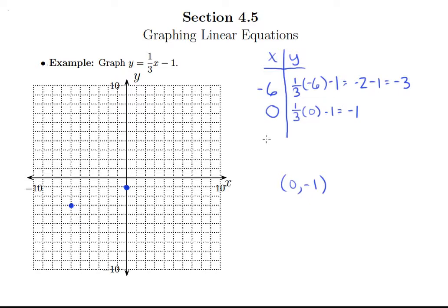So we're always going to find at least three points. So let's plug in another x value that is divisible by three so that when I multiply it by one third I get an integer. This time let's do nine. So one third times nine minus one equals one third times nine is three, that equals two. So all the way over here at x equals nine then up two.